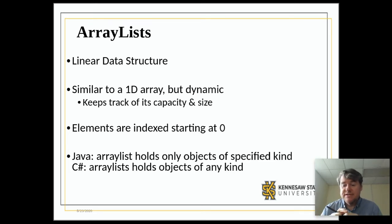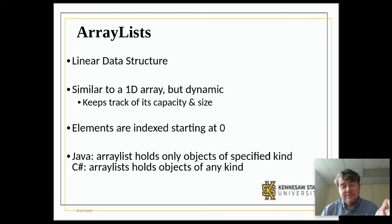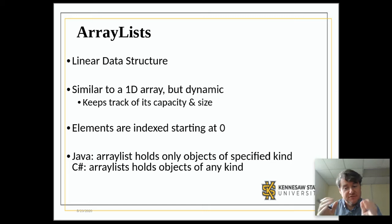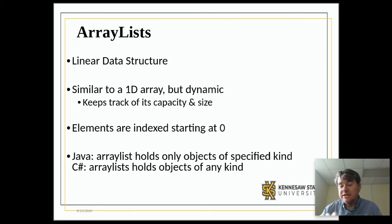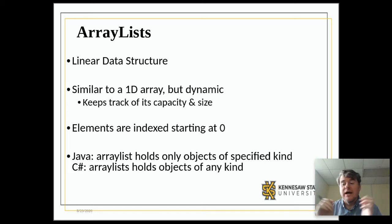Once you say that it is of size 10, you can never put an 11th item in there. Whereas an array list dynamically grows and shrinks as it needs to. An array list is everything that an array is, mostly, with a couple of additional features — methods for adding stuff, removing stuff, maybe even sorting the array. And it also has the ability to grow as we need to add more things.